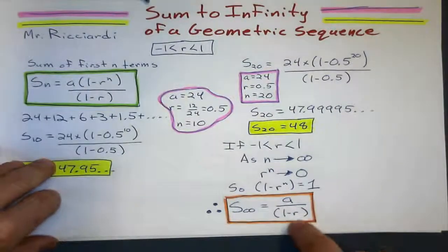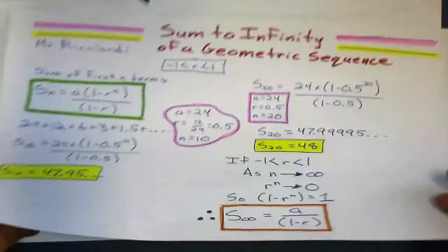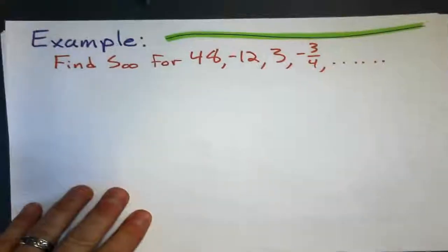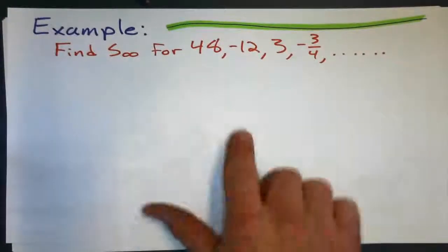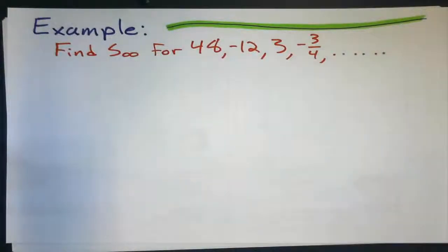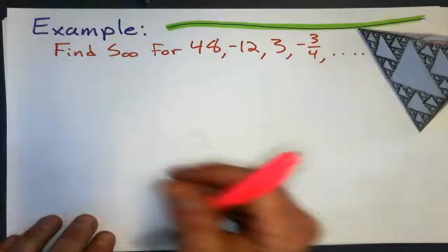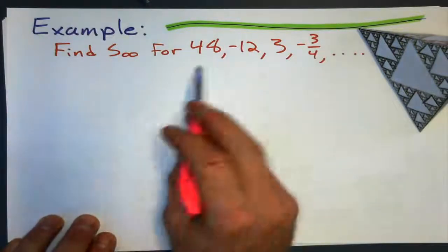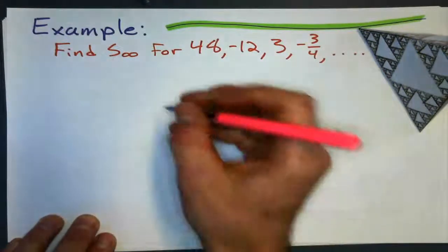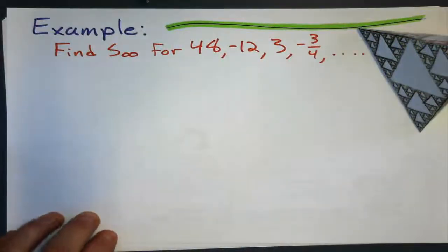So let's look at one example of using that formula in a geometric sequence. So I say, okay, well, let's find the sum to infinity for this guy. So we look at our sequence. We go, well, hmm, is it a geometric sequence? First of all, does it have a common ratio?